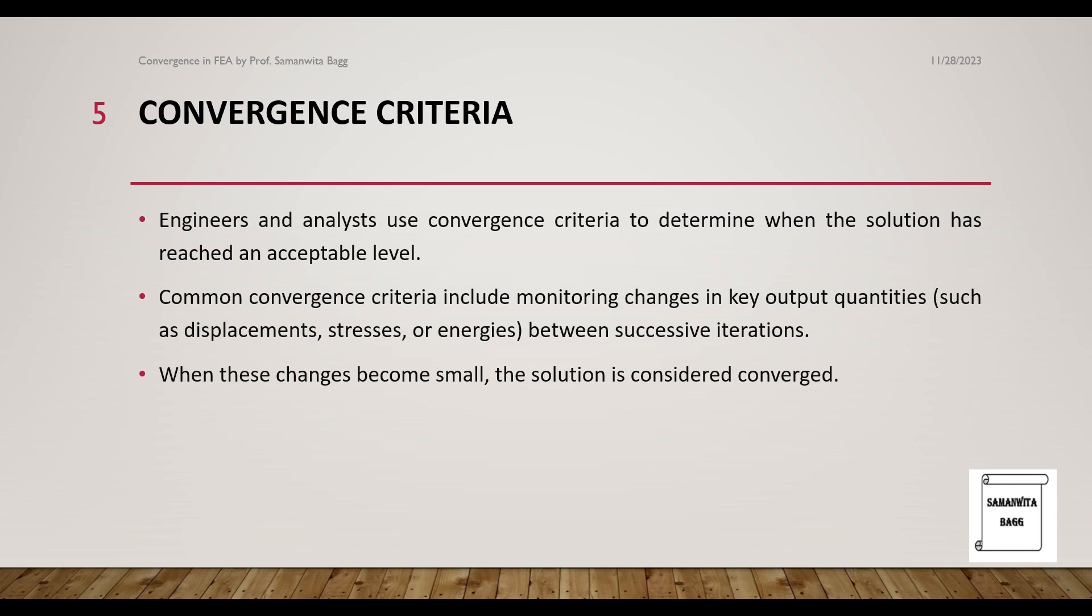Suppose if the value is 58, when do you say that you have converged? It is possible that 57.4 is the maximum value that you will get which is converged towards the exact solution. This is an example of stress, but you can have other quantities like displacement, strain energy, or other parameters which would define the convergence of the system. When these changes become small, the solution is considered converged.